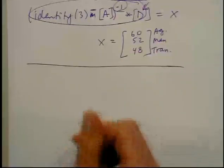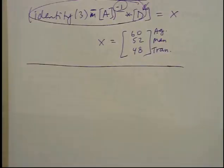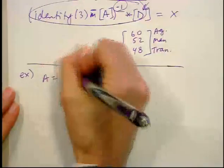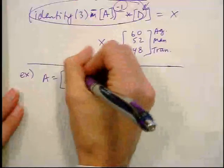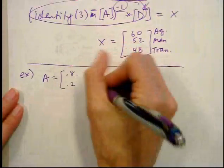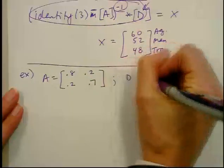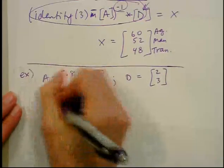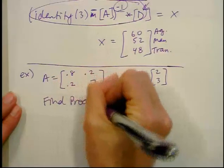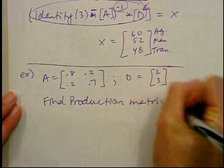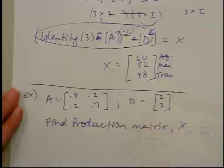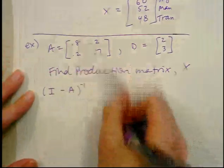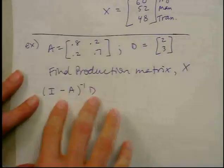Let's do another example — just a two by two matrix this time. I'm going to hand you matrix A: 0.8, 0.2, 0.2, 0.7, and demand matrix D: 2 and 3. Our goal is to find the production matrix X.